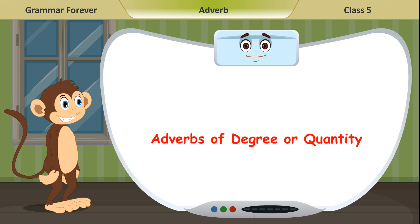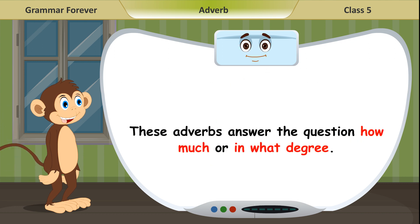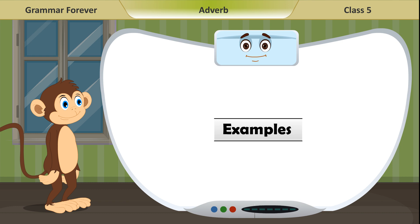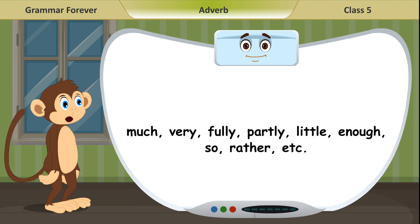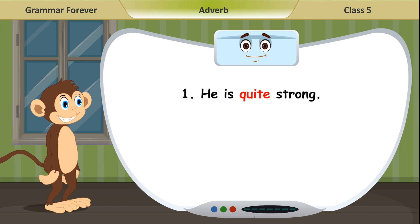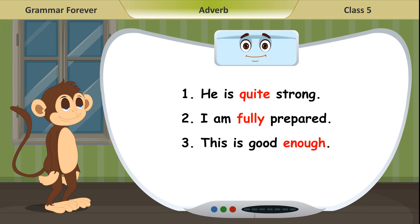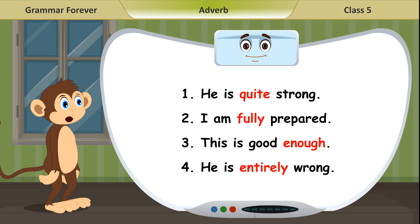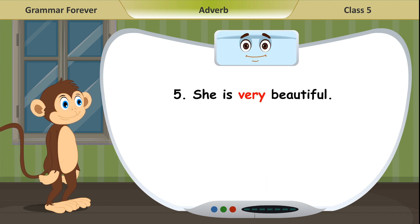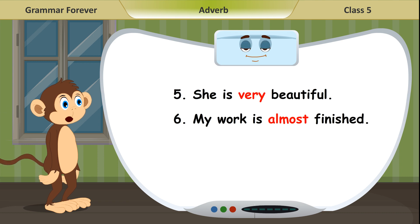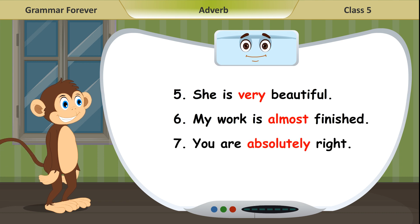Adverbs of Degree or Quantity: These adverbs answer the question 'how much or in what degree.' Examples include: much, very, fully, partly, little, enough, so, rather, etc. Example sentences: 1. He is quite strong. 2. I am fully prepared. 3. This is good enough. 4. He is entirely wrong. 5. She is very beautiful. 6. My work is almost finished. 7. You are absolutely right. 8. He was rather busy.